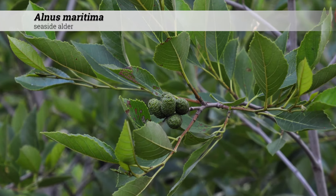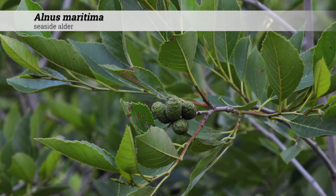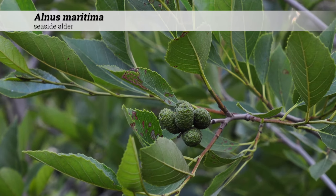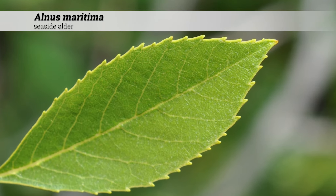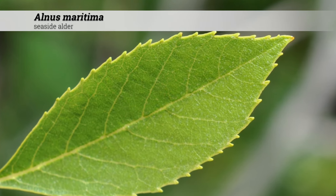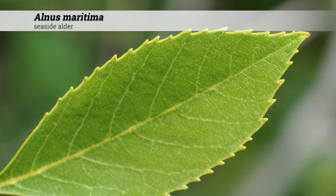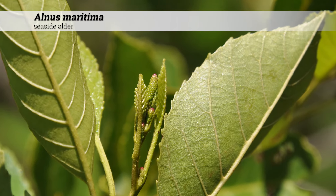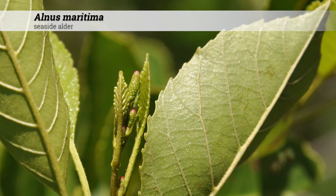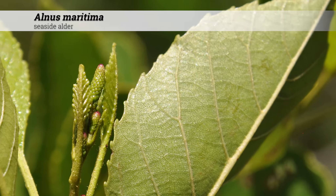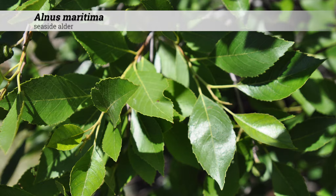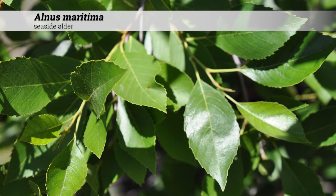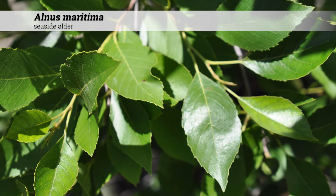The foliage is deciduous and alternate. Leaves are narrowly elliptic, oblong, or narrowly ovate. The margins are finely toothed, and the underside of most leaves are glabrous, although they can be resin-coated when young. Leaves are dark green in mid-summer and turn yellow in the fall.